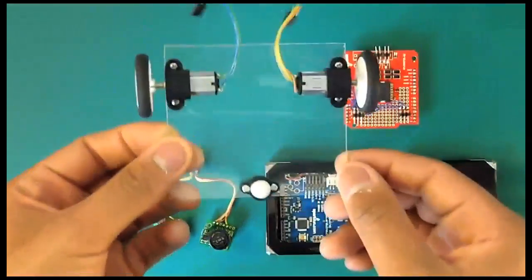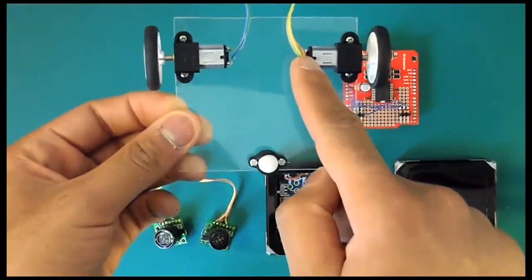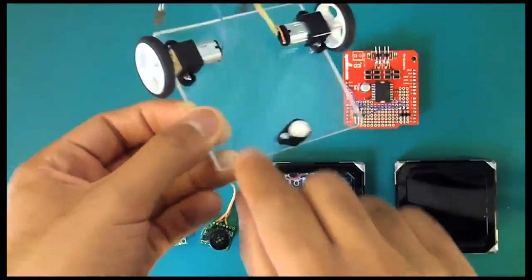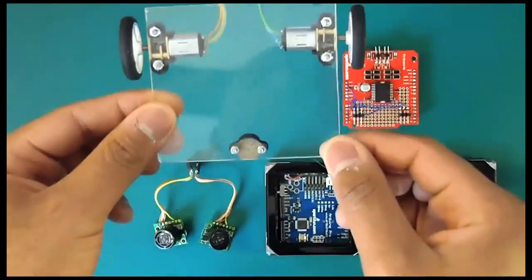First we have the wheel assembly which uses two small DC motors and a third caster wheel all screwed to a small piece of plexiglass.